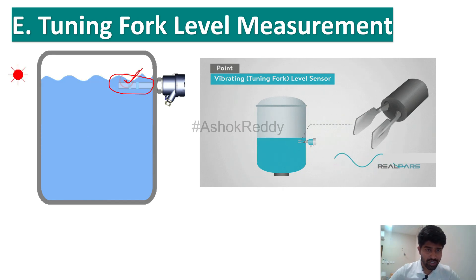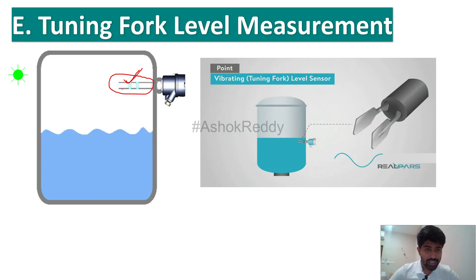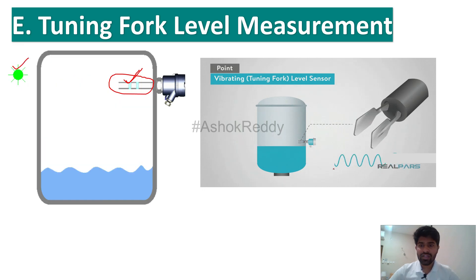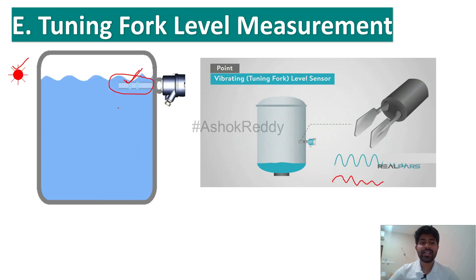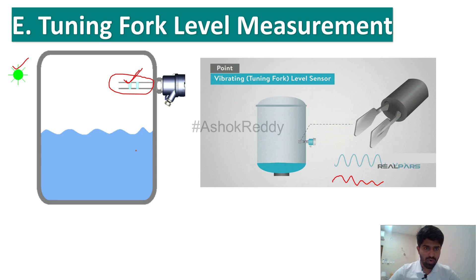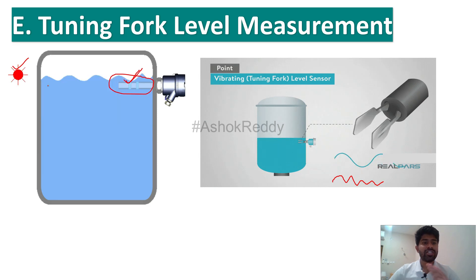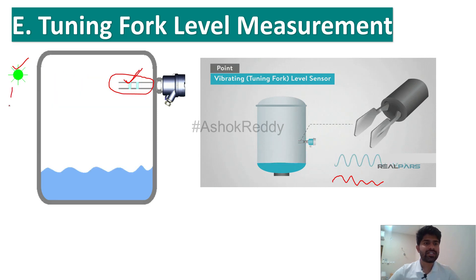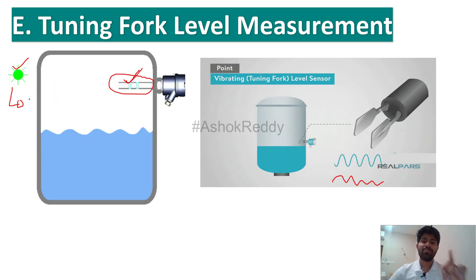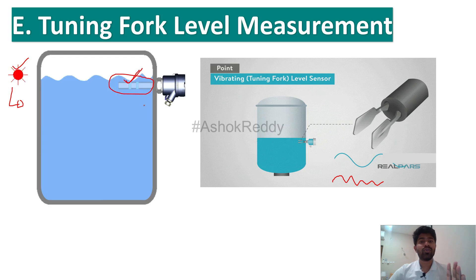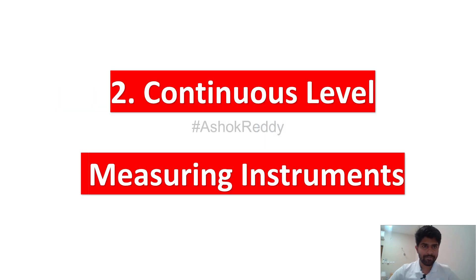The fifth one is the tuning fork level measurement. We have installed a tuning fork instrument. Whenever the water touches this instrument it is considered as high, because the vibration will increase and it will send a signal to the PLC. Whenever there is no water, the vibration will stop and it will send a low signal to the PLC. This is how the tuning fork level measurement works.